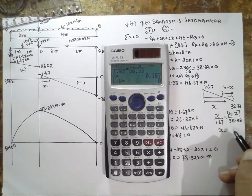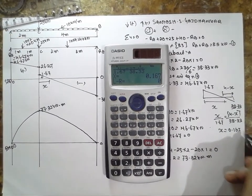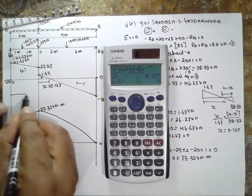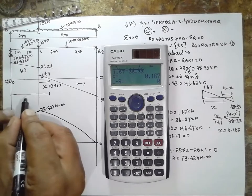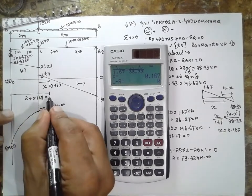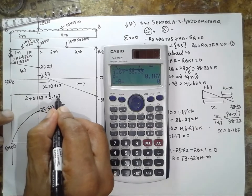Shift solve is equal to, x value will be 0.167. The total length from this part to this part will be 2 plus 0.167. If you add it, the value will be 2.167 meter.